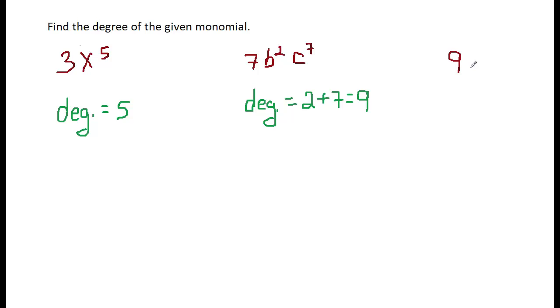Now the last one I have here - it's just a constant, it's a number, there are no variables. Whenever you have a constant, doesn't matter if it's 9 or 19 or 99 or 10 million and 9, the degree is always 0 for a constant.